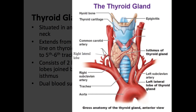The thyroid gland has a dual blood supply, with the superior aspect of the gland being supplied by the superior thyroid branch of the external carotid artery, whilst the inferior aspect of the gland is supplied by the inferior thyroid branch of the thyrocervical trunk, which itself is one of the main branches of the subclavian artery.